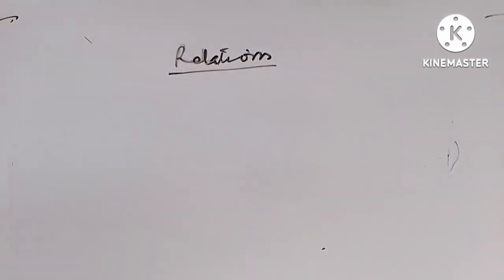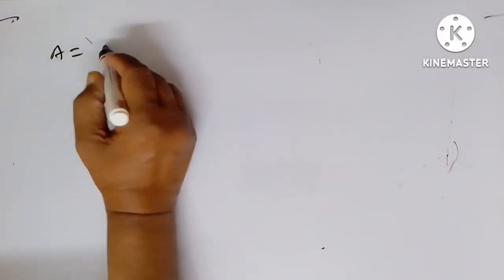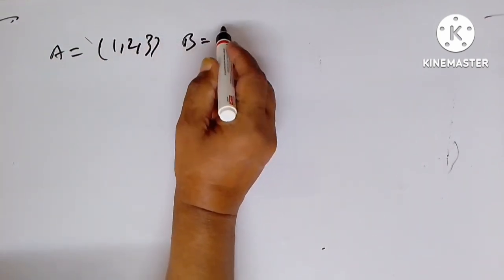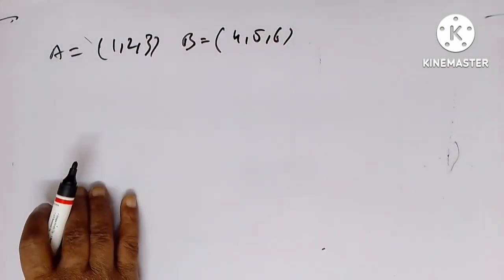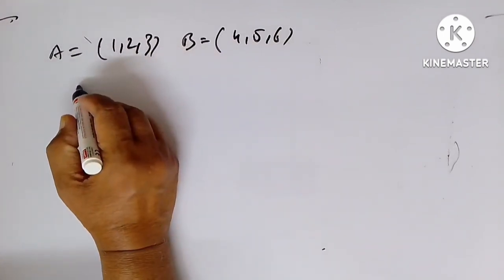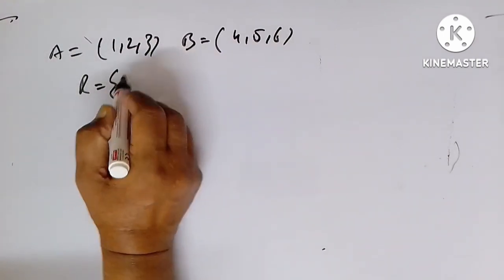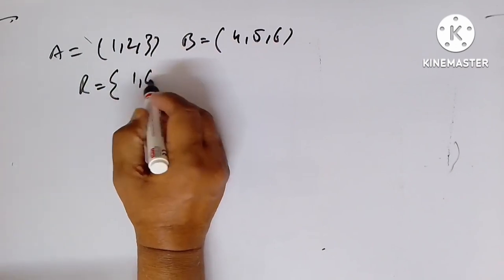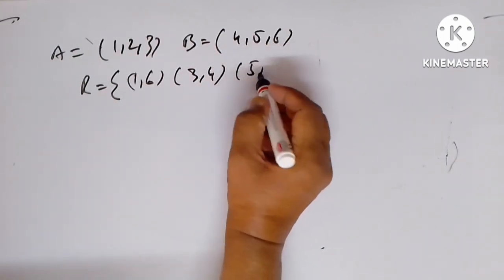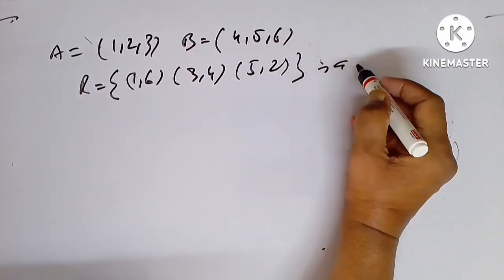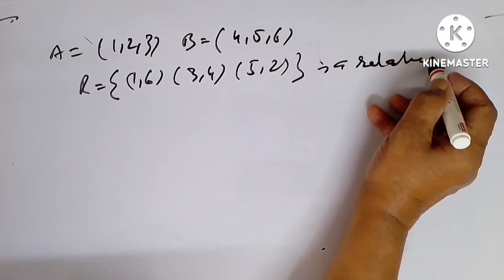Now we take up some examples to understand this topic. If A is equal to {1, 2, 3} and B is equal to {4, 5, 6}, we have to see whether R equal to {(1,6), (3,4), (5,2)} is a relation or not.